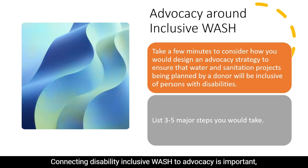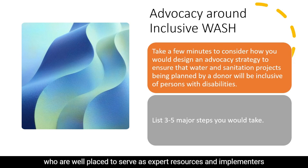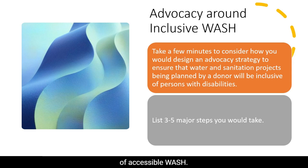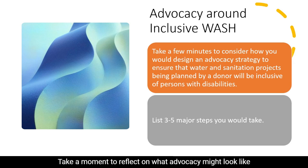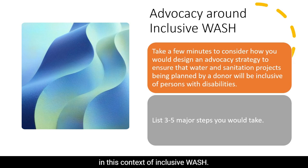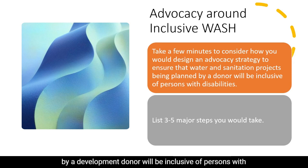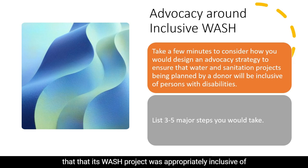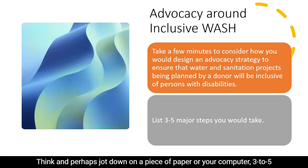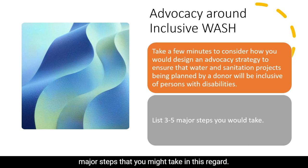Connecting disability-inclusive WASH to advocacy is important, especially for organizations of persons with disabilities who are well-placed to serve as expert resources and implementers of accessible WASH. Take a moment to reflect on what advocacy might look like in this context. How might you design an advocacy strategy to ensure that water and sanitation projects are inclusive of persons with disabilities? Think and jot down three to five major steps you might take in this regard.